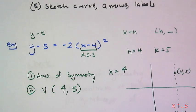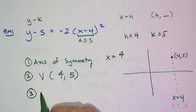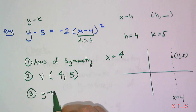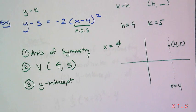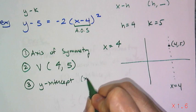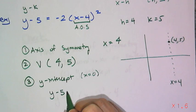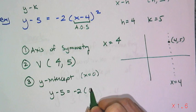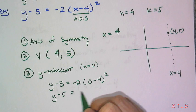Now I need another point. And in this case, I'm going to find the y-intercept. And I can find the y-intercept because x is equal to 0 at the y-intercept. So I have y minus 5 equals negative 2 times 0 minus 4 squared. And then I just have to solve this equation.